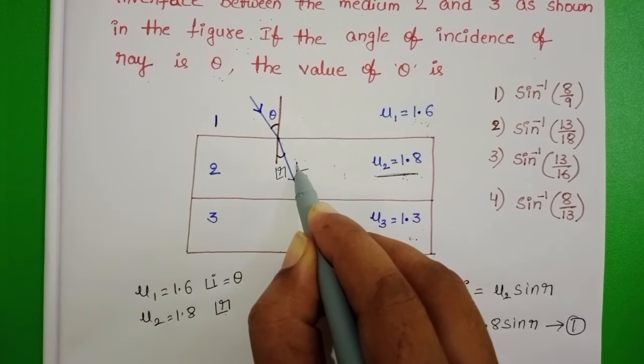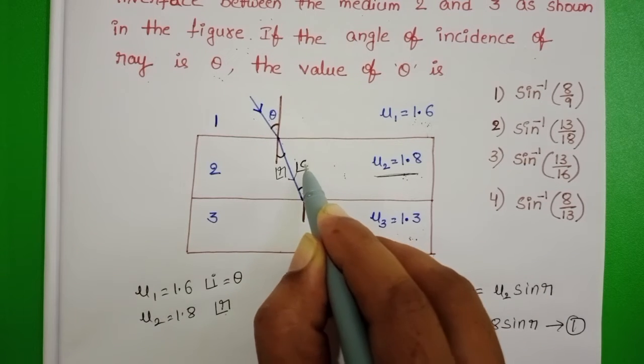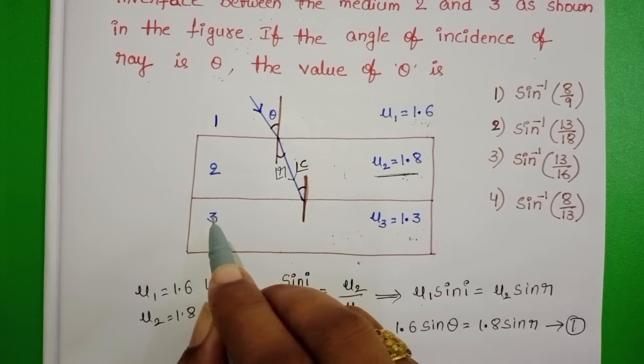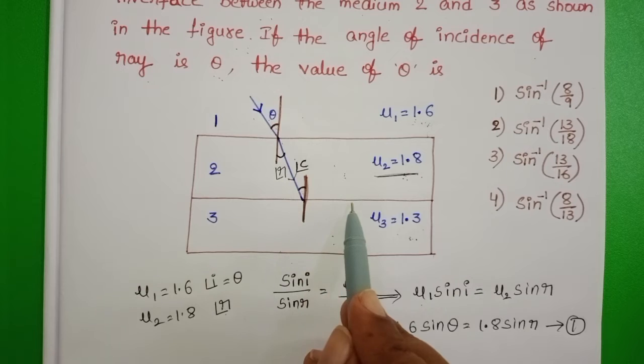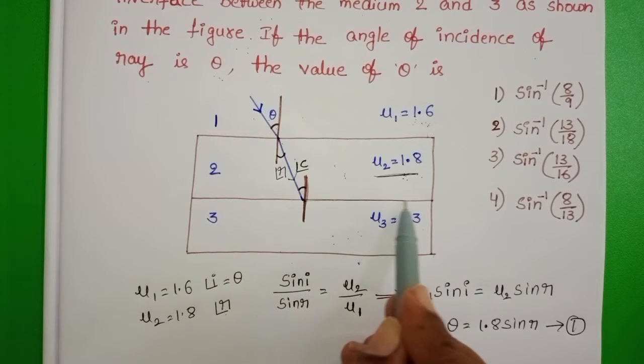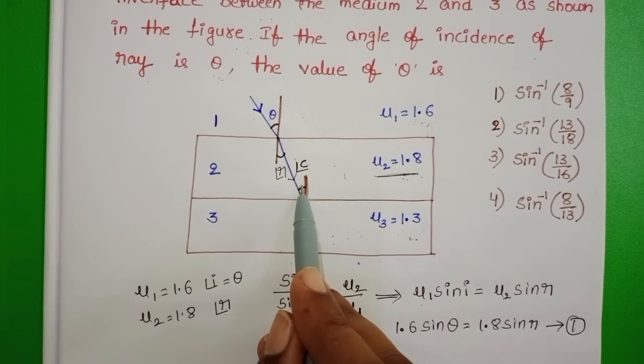At the same time, in given question, angle of incidence equals critical angle. So what is critical angle? The angle at which refracted ray grazes along the interface is called critical angle.